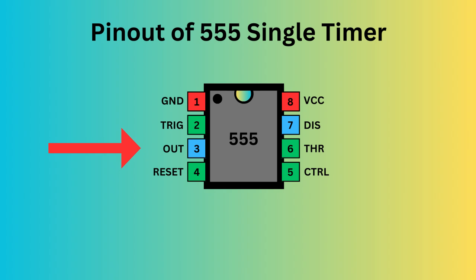Monostable, astable, or bistable. Pin 4, the reset pin, is used to reset the 555 timer's internal flip-flop. Pin 5 serves as the control pin, enabling you to adjust the threshold voltage levels used by the internal comparators to set and reset the flip-flop.